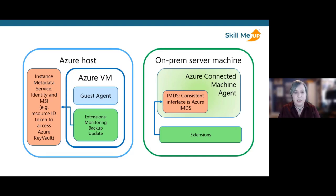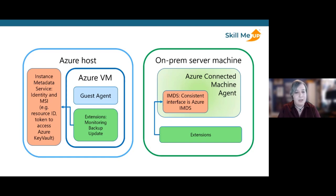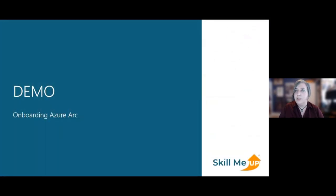The extension agent manages VM extensions including install, uninstall, and upgrade. Extensions are downloaded from Azure and copied into the local machine — into the downloads folder on both Windows and Linux — where they're extracted and installed. From there, the next pieces make it a compelling story to have your environment managed and maintained as though it's part of Azure.